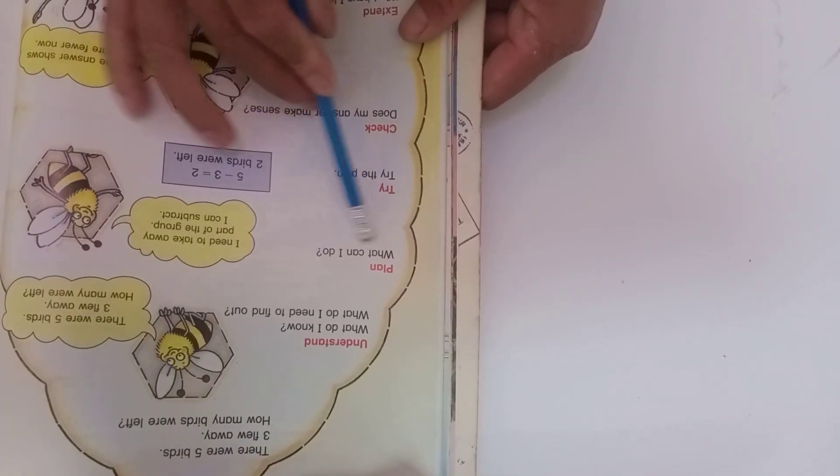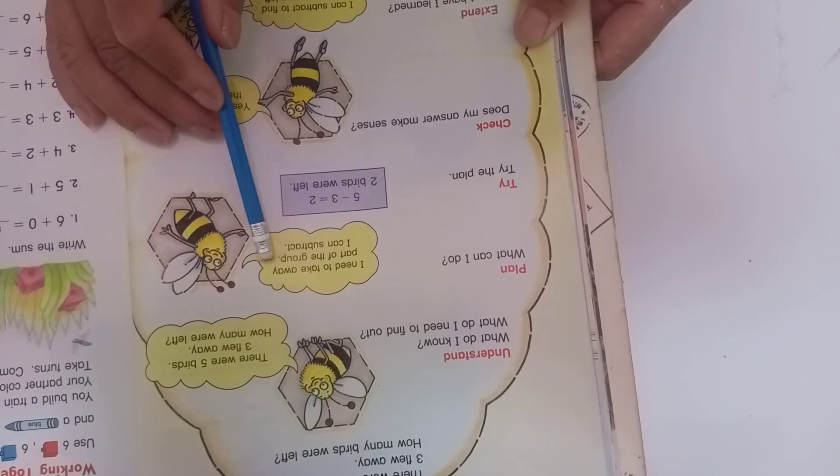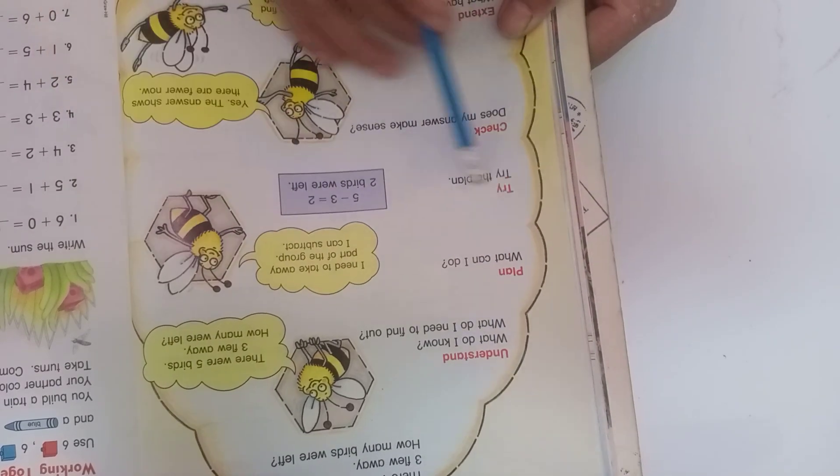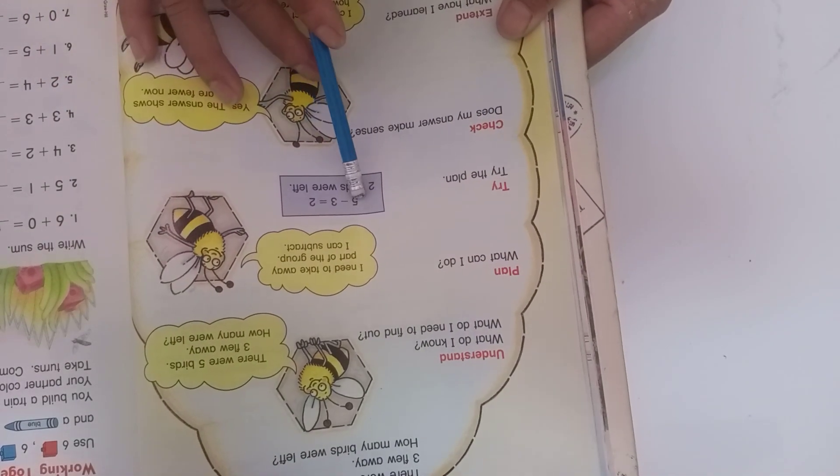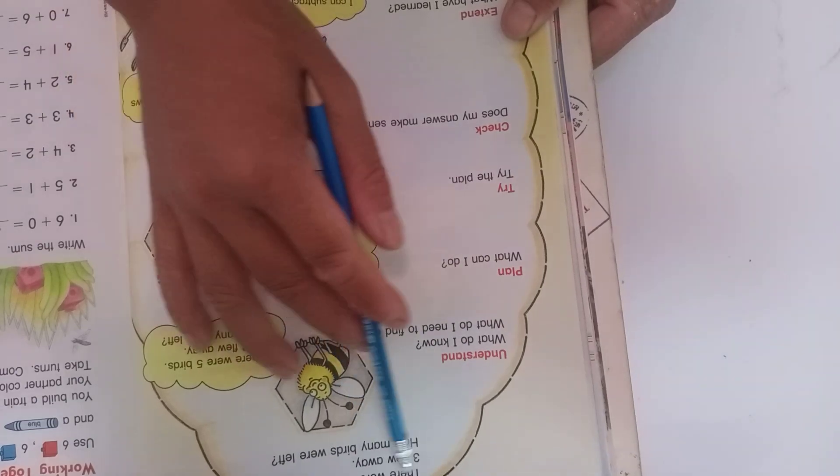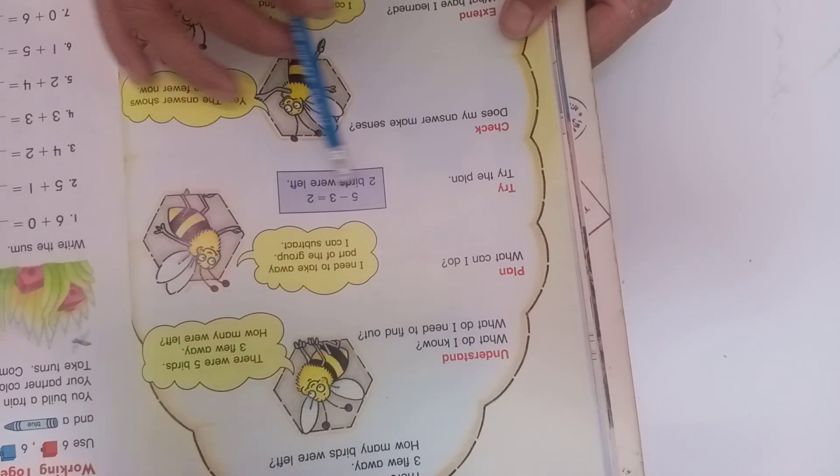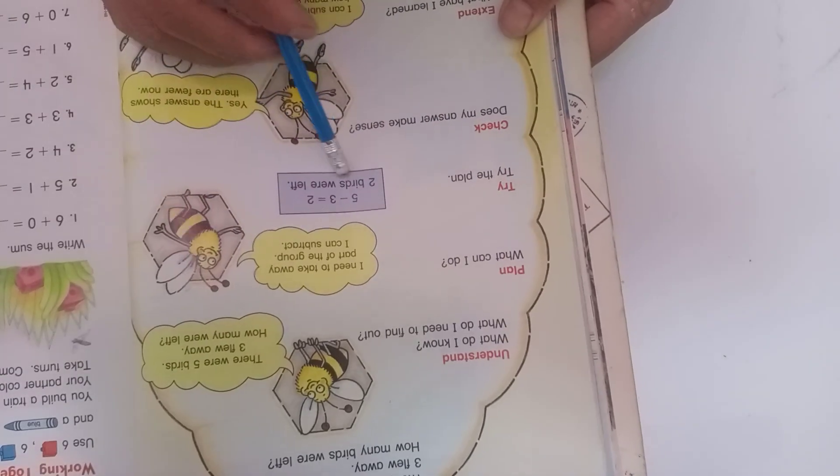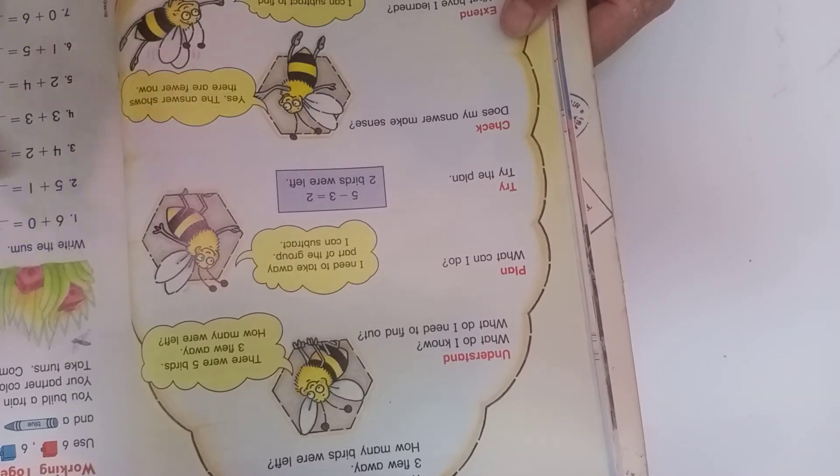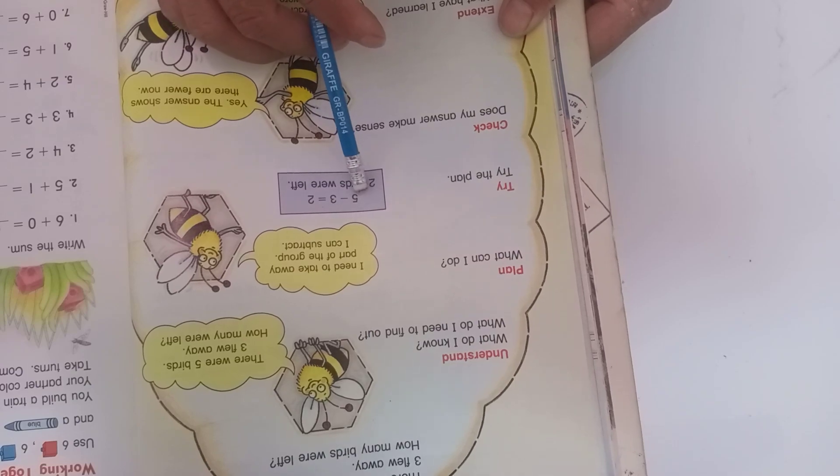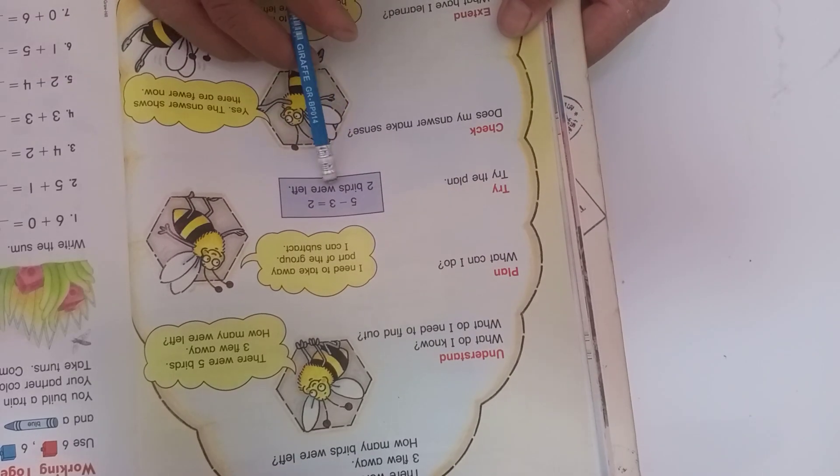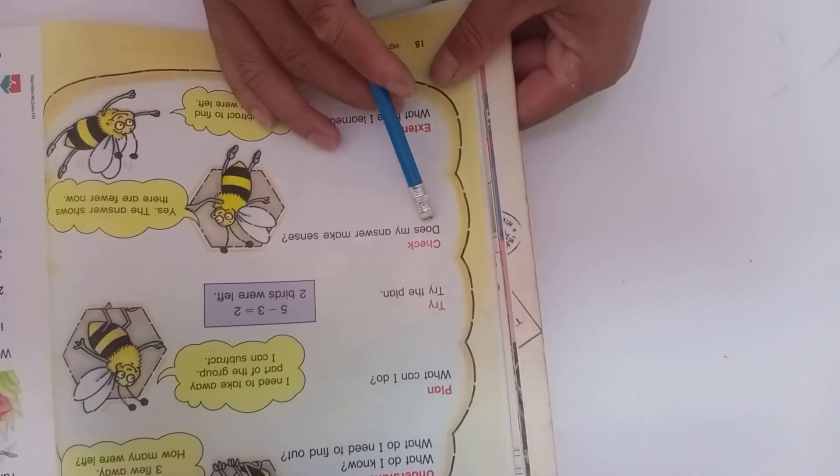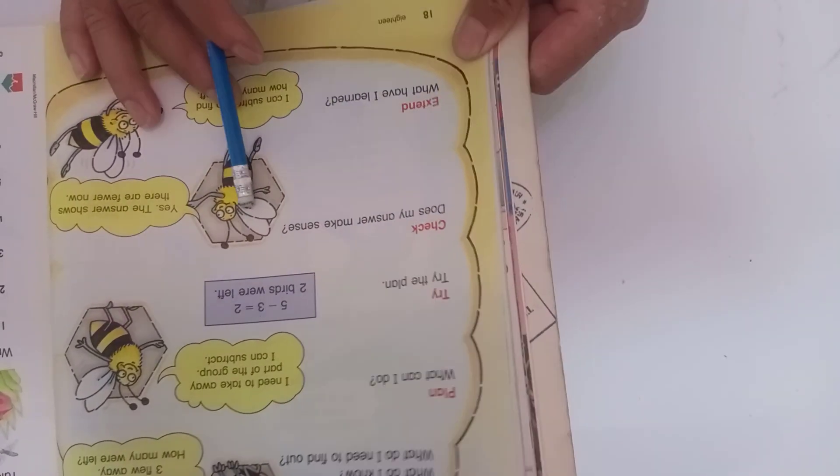Then what can I do? I need to take away part of the group. I can subtract. Three flew away means take out. Five take three equals two birds. Right, very good. Check - does my answer make sense?